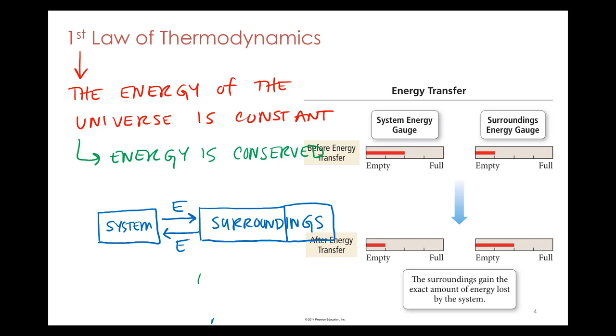So the system can transfer energy to the surroundings or the surroundings can transfer energy to the system. The energy can go that way or that way. But the energy has to be conserved. The energy has to be constant. We can't lose or gain any energy. So this is an example from your textbook - the energy transfer of these gauges. Here we have the system energy tank and the surroundings energy tank. Before the energy transfer at the start, the system has a half a tank.